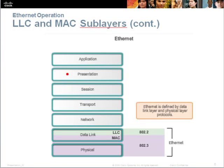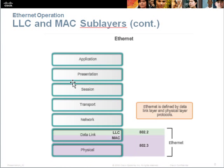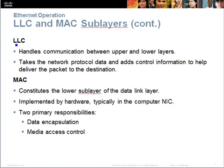In graphical context, this is how it looks in the OSI 7-layer model. Our Ethernet network actually belongs to the data link and the physical layer. For the Ethernet LLC layer, it handles the communication between the upper and lower layers, and it takes the network protocol data and adds additional control information to ensure that the packet reaches the destination.